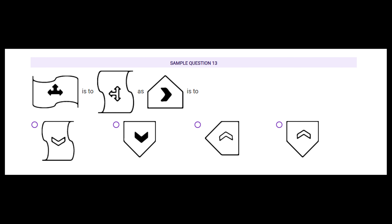Sample question thirteen: the first shape is a flag with a black arrow symbol inside that turns white. So the flag shape rotates and the black inside becomes white. For the house shape: it cannot be A since the house must remain a house. B is eliminated because black must turn white. It's either C or D. The flag twists approximately 90 degrees — a 180-degree twist would keep it the same. So the house must also turn 90 degrees, and only shape C shows that. So C is the answer.